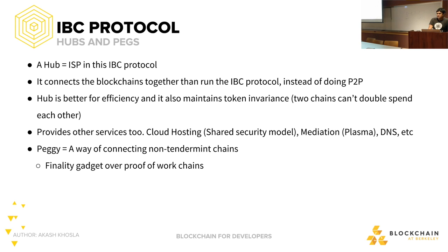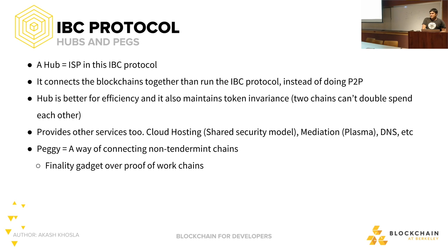The hub will also provide other services. Just as ISPs provide cloud hosting, DNS, etc., hubs will provide services like a shared security model — I want to make a blockchain but don't want to find my own validator set; I'll just give it to the Cosmos Hub validators and let them validate it for me. You can think of this like cloud hosting. The hub will also probably do DNS-style identity services. Chains that want to connect to the Cosmos ecosystem will find a hub to connect to, and hubs will compete on these different features.